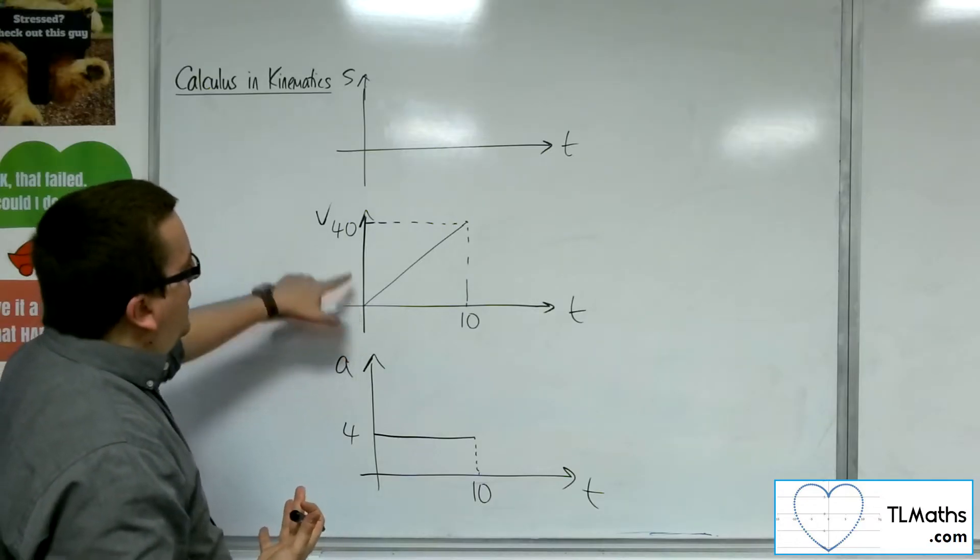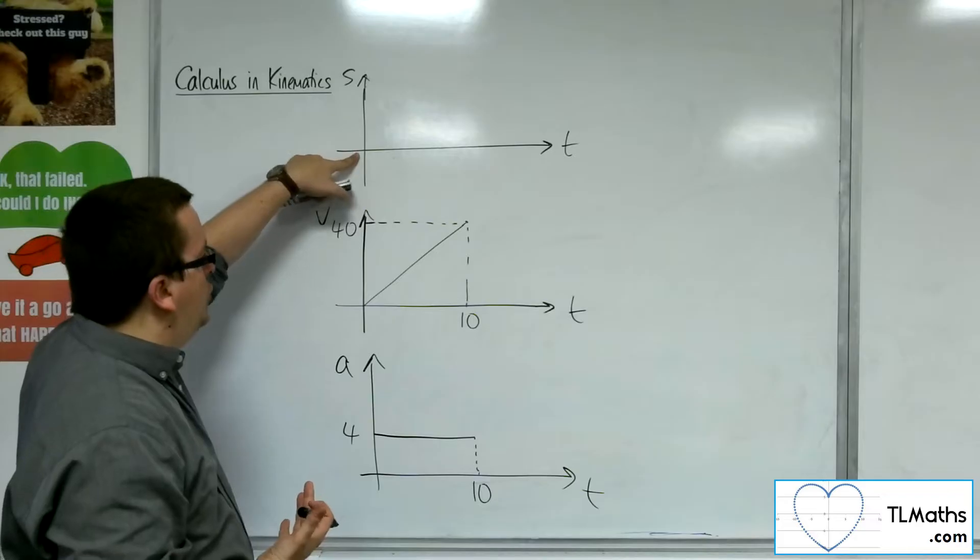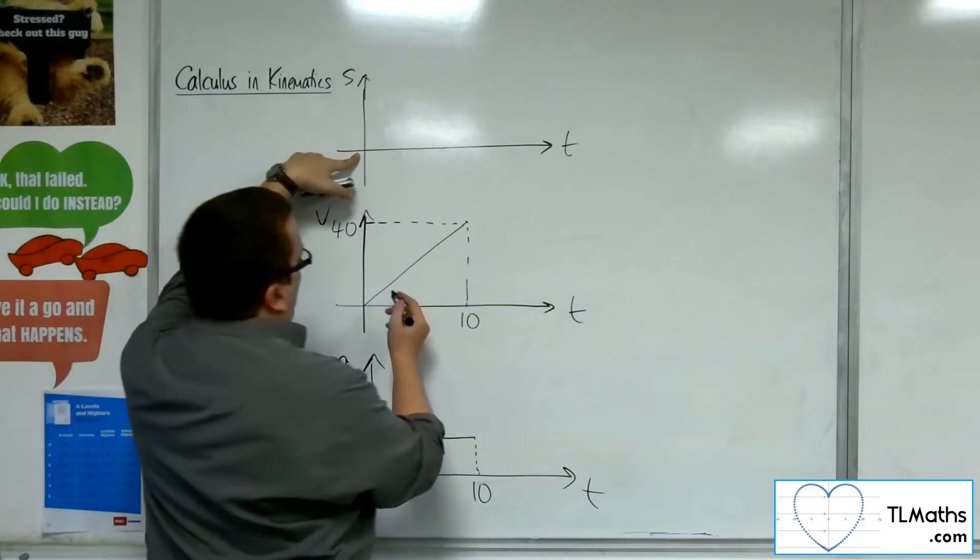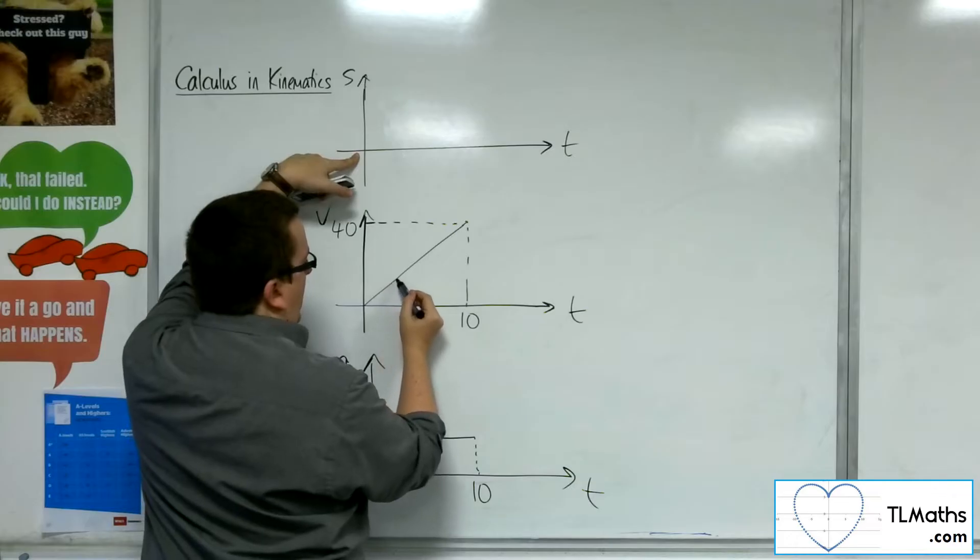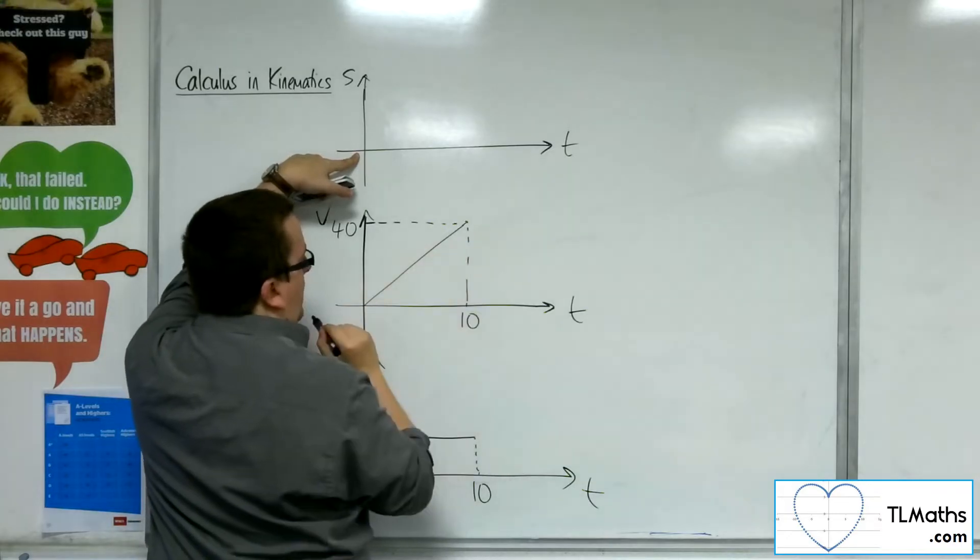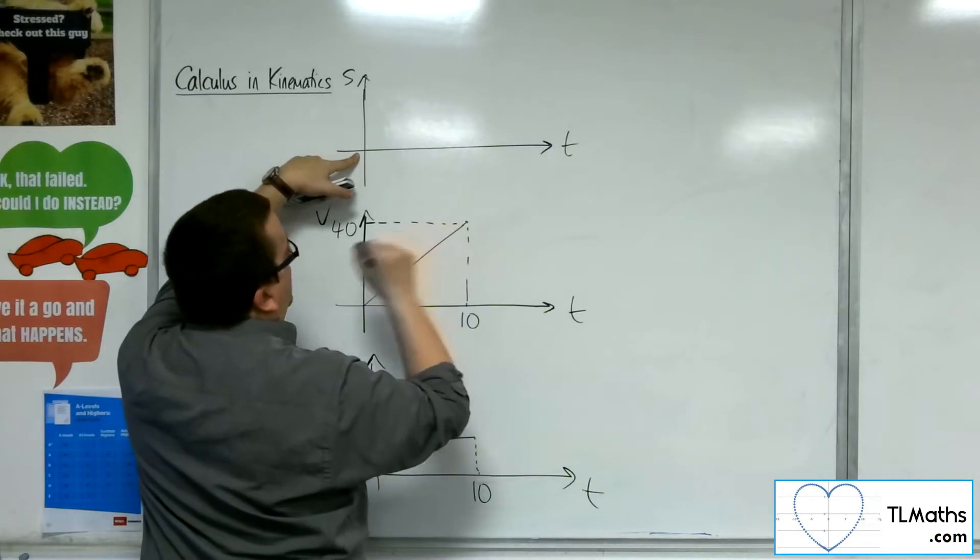So what's happening is that let's say I'm starting at the origin and then I am slowly increasing in velocity and then by that point I am quite fast, aren't I?